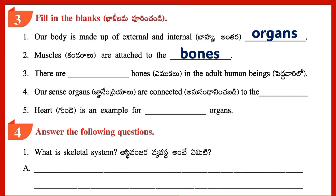3. There are 206 bones in the adult human being. 4. Our sense organs are connected to the brain.